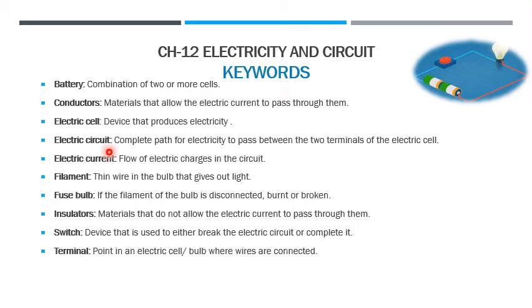Electric circuit: complete path for electricity to pass between the two terminals of the electric cell. Electric current: flow of electric charges in the circuit. Filament: thin wire in the bulb that gives out light.